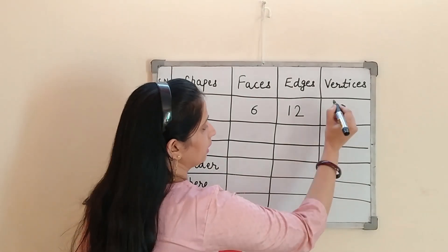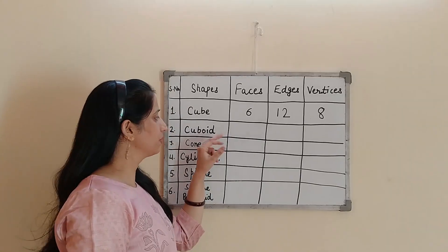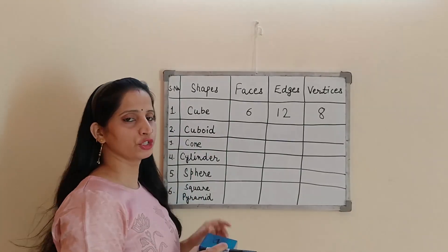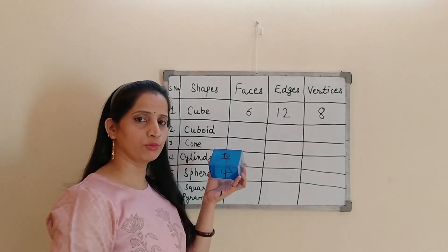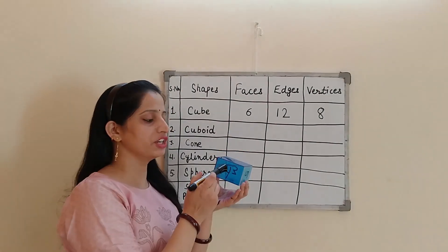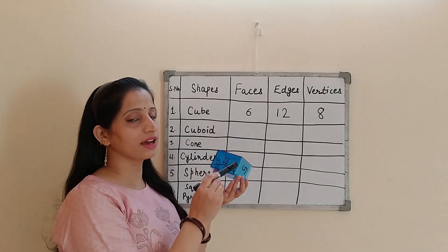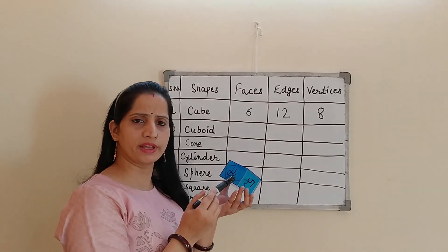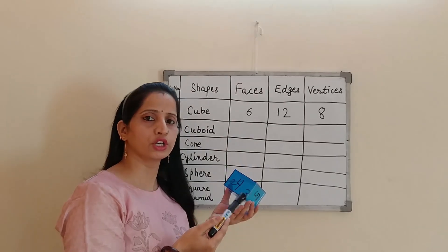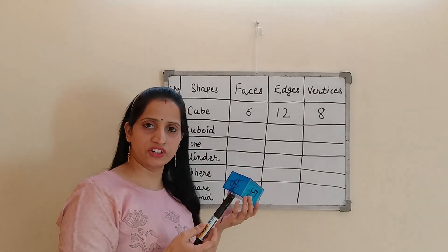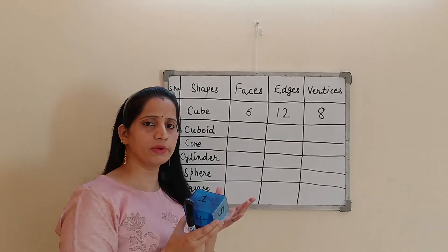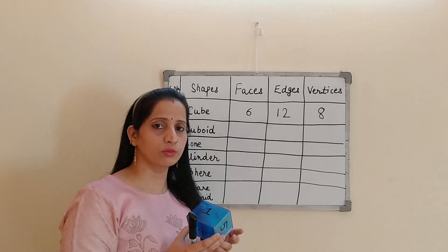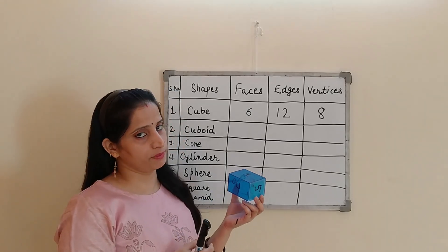Now we will discuss about second 3D shape that is cuboid. See, I have a cuboid in my hand. Cuboid is a 3D shape because all the faces are rectangular in shape. The examples of cuboid are your pencil box, your notebook, your book, the refrigerator, almira. There are so many things that you can find at your home that are cuboid in shape.